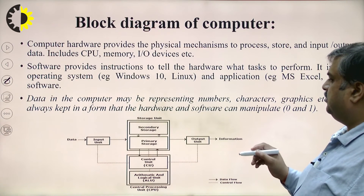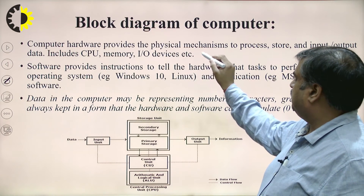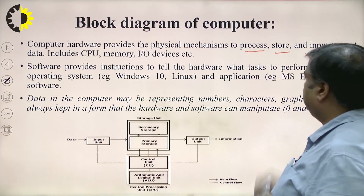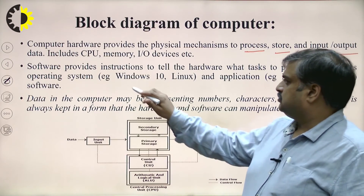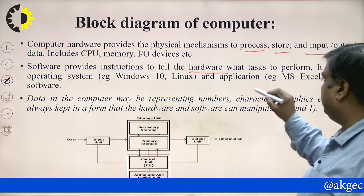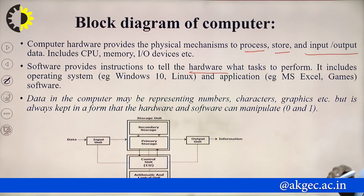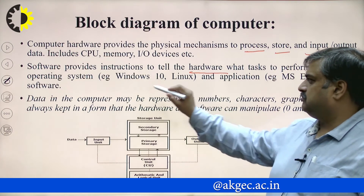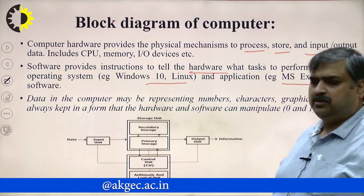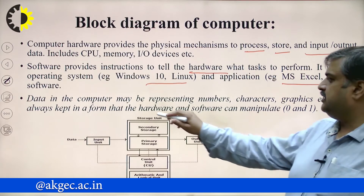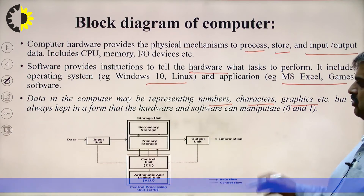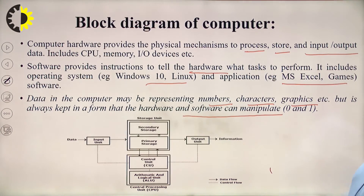The computer provides the physical mechanism to process, store, and perform input and output. Software provides instructions to tell the hardware what task to perform. This includes operating systems like Windows and Linux, and application programs like MS Word and MS Paint. The data in the computer may represent numbers, characters, or graphics, but it is always kept in a form that hardware and software can manipulate.